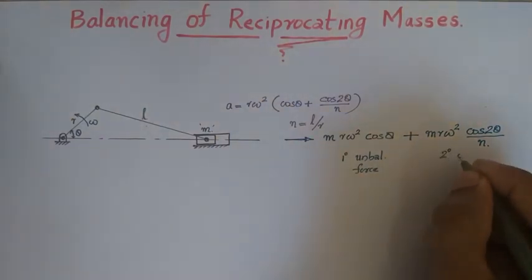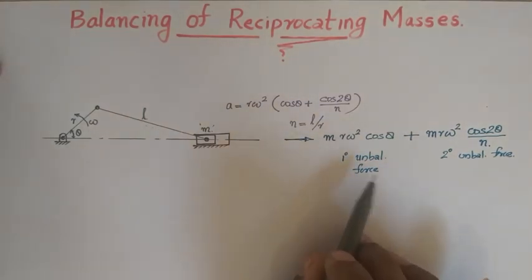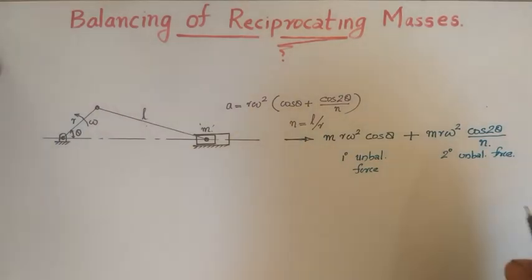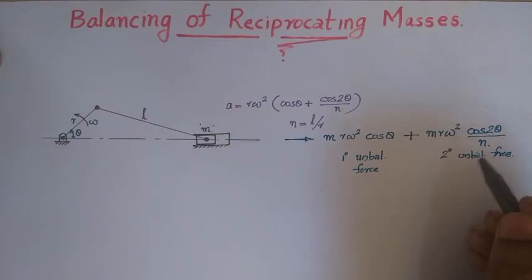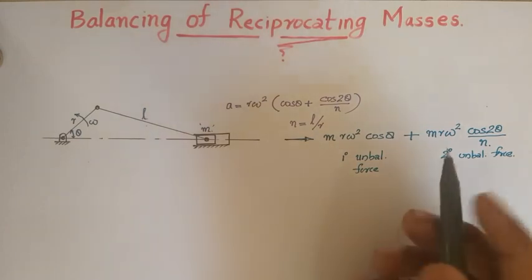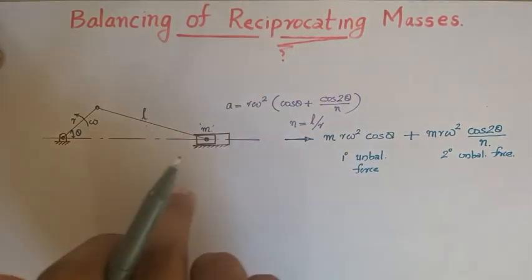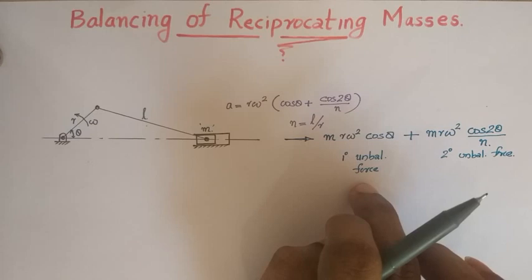The first term, m·r·Omega²·cos θ, is called the primary unbalanced force, and the second term, m·r·Omega²·cos 2θ / n, is called the secondary unbalanced force. In balancing reciprocating masses, we balance both. The secondary unbalanced force has n in the denominator — since n (= L/R) is usually large, it is typically neglected. However, for high-speed engines where Omega² is large, the secondary unbalanced force becomes significant.